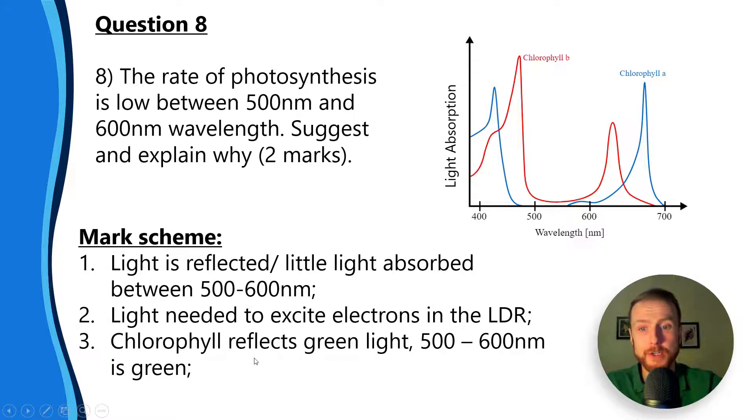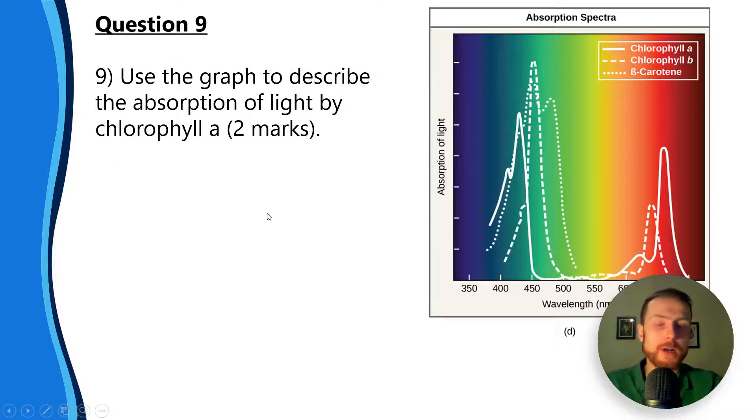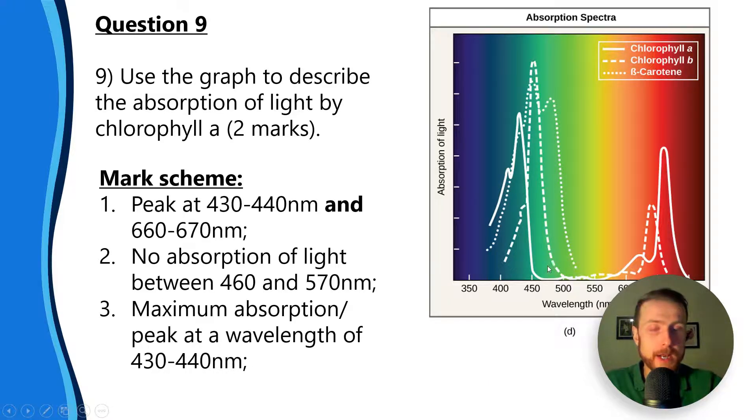Question nine: this is an alternate graph. Use the graph to describe the absorption of light by chlorophyll a. You get one mark for saying it would peak between 430 and 440 nanometers. Chlorophyll a is the solid line, so we can see there we've got a nice peak. Don't let that throw you - you might see in other mark schemes this is a question all about can you read a graph, can you read accurately. Make sure you get your ruler out and really look precisely.